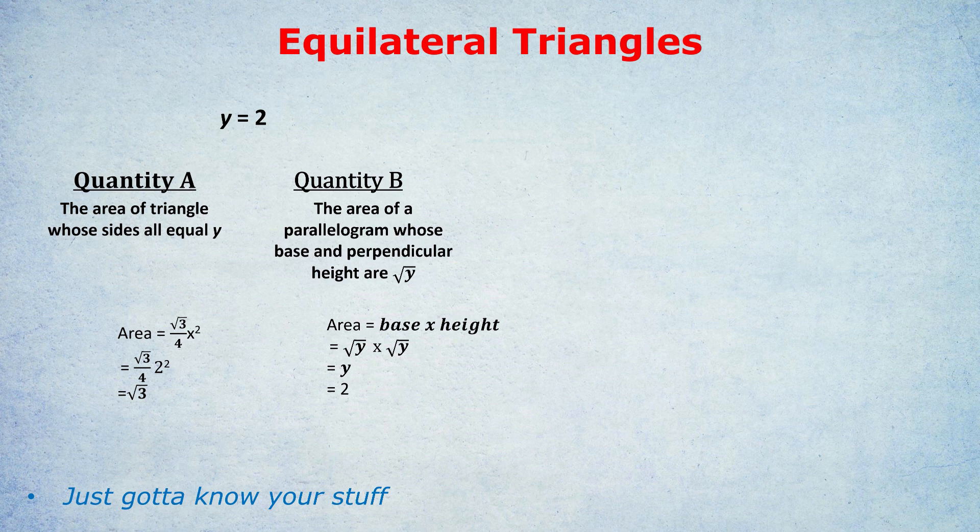To be honest, it saves a lot of time. So here we would know straight away that root 3 is about 1.7 and therefore quantity B is bigger than quantity A.